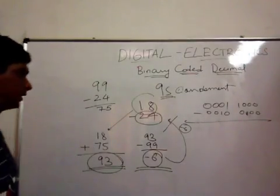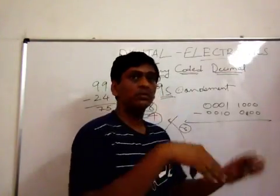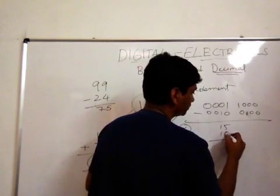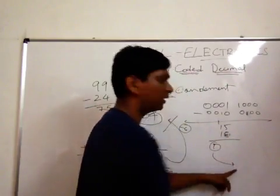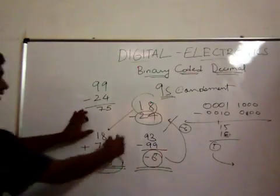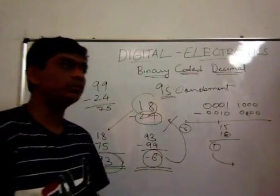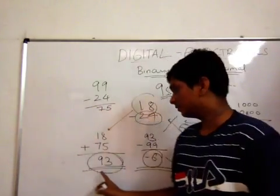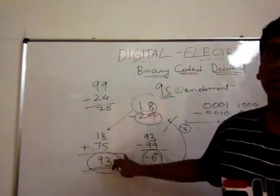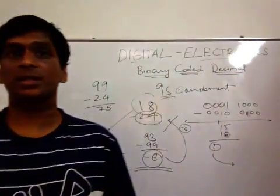To summarize the nines complement method: if there is a carry after adding, you add that carry to the result — that is the actual difference. But when you have no carry — meaning adding two two-digit numbers gives a two-digit result — the result is negative, and you find the difference by subtracting the complement value from the result. In our case, 93 minus 99 gives minus 6. Next, I will explain the tens complement method.